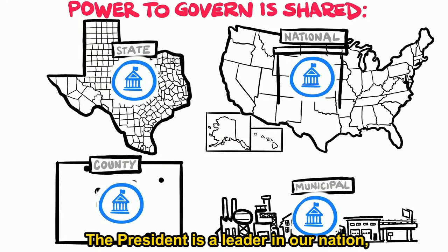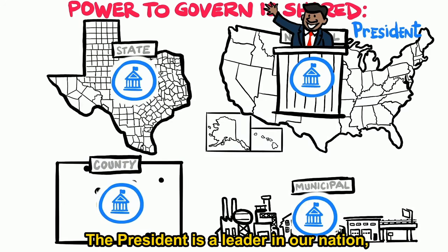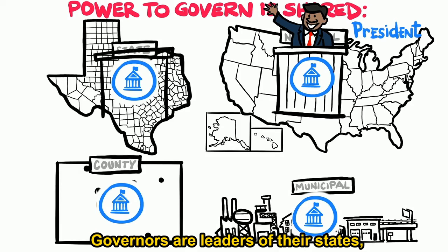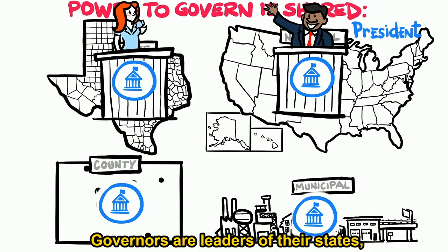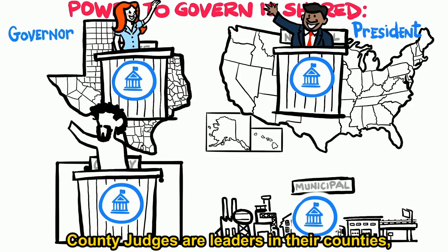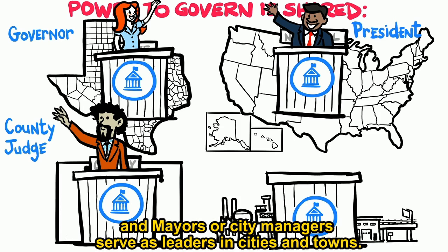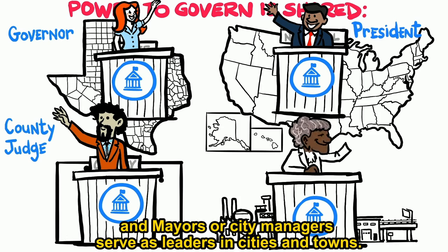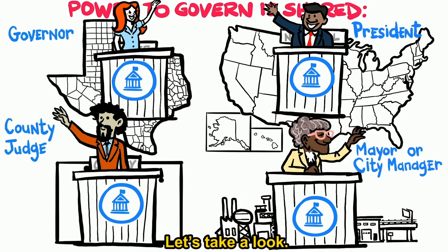The president is a leader in our nation, governors are leaders of their states, county judges are leaders in their counties, and mayors or city managers serve as leaders in cities and towns. Let's take a look.